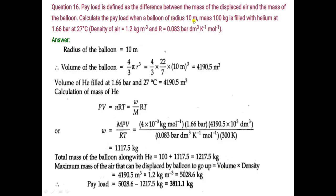Density is given in the question and volume of the balloon we can calculate by the radius. Radius of the balloon is given as 10 meters. Formula is 4/3 π r³. From this formula we can determine the volume of the balloon. Putting the value, the volume is equal to 4190.5 m³.